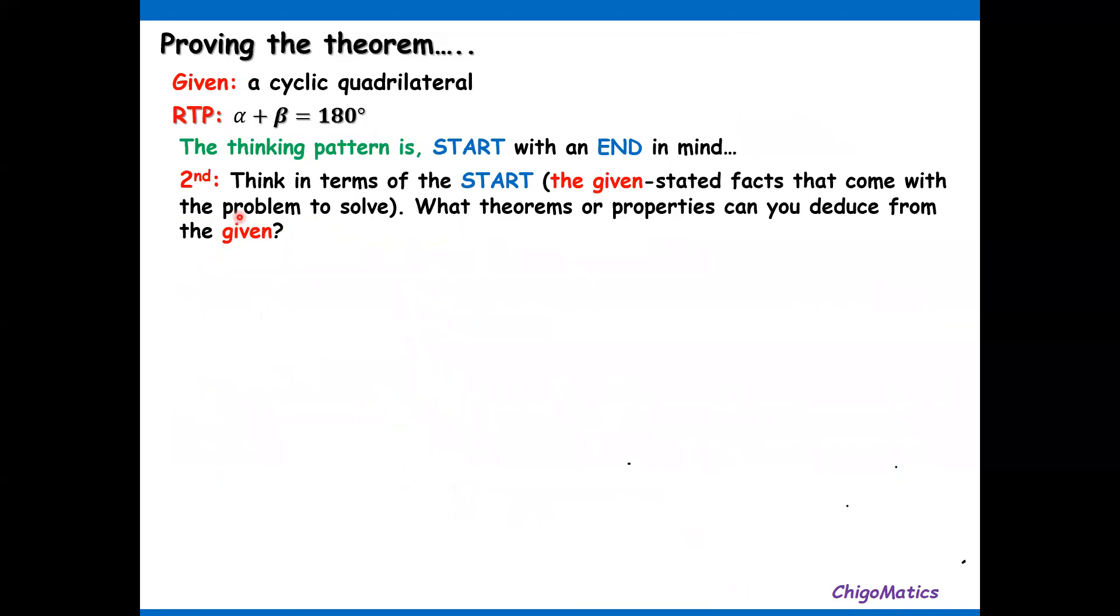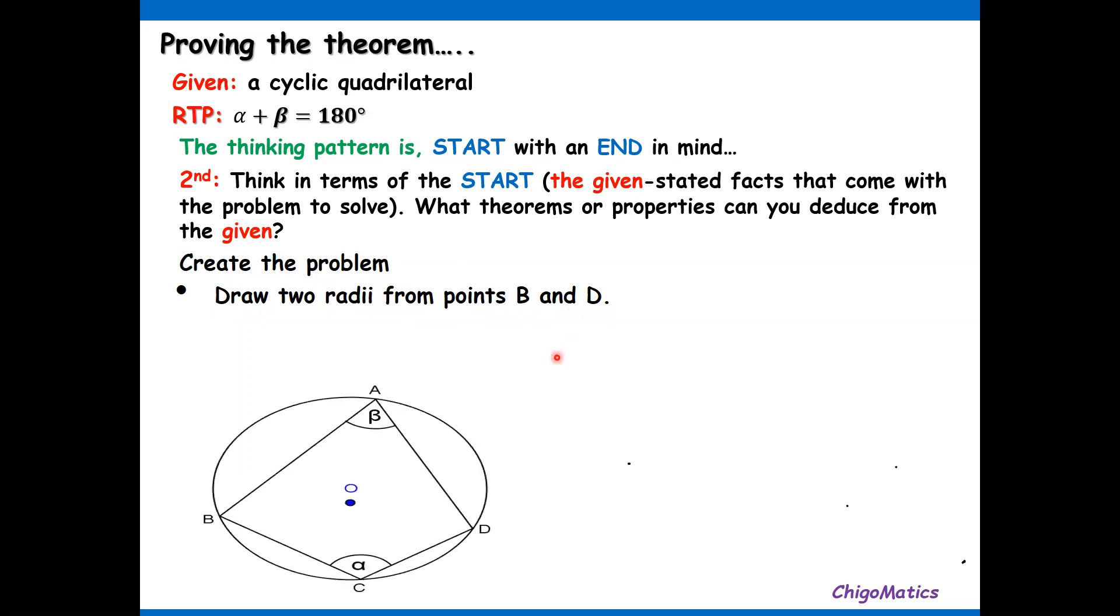Secondly, think in terms of the start—what we are given, the facts that come with the problem to solve. What theorems or properties can you deduce from the given? You create a problem: draw two radii from points B and D. Here is what we are given, so we are going now to draw radii OB and OD. As you can see, the green line represents the radii.